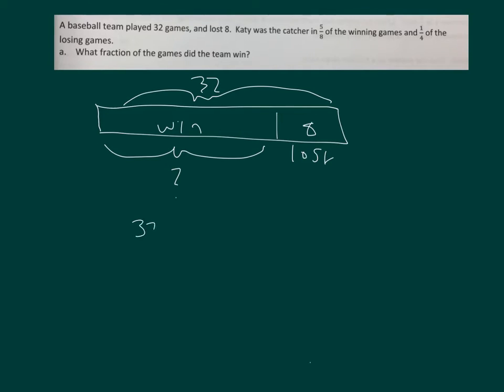So we have 32 minus 8, which equals 24. And then the amount that they won is 24 out of 32. They won 24 out of 32 of the games, which we can simplify. They won 3/4 of the games.